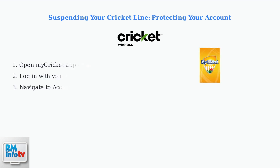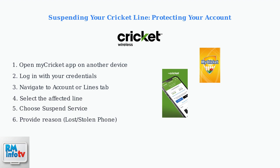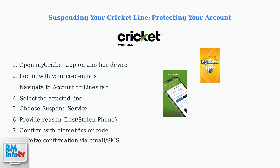Open the MyCricut app on another device, log in, and navigate to the Account or Lines tab. Select the affected line and choose Suspend Service, providing the reason such as lost or stolen phone. Confirm using biometrics or a code.